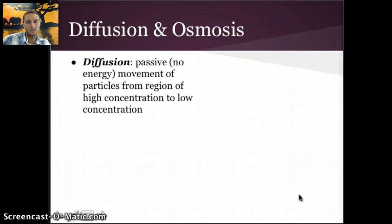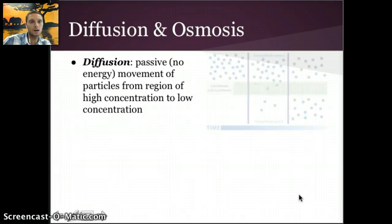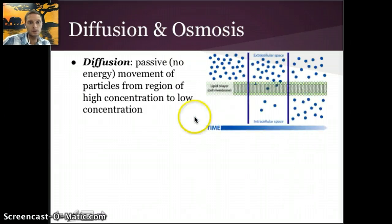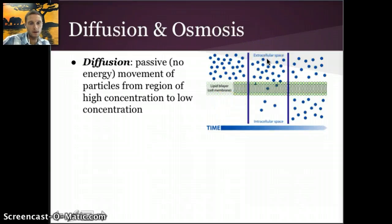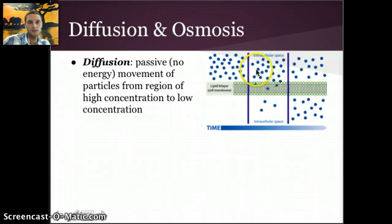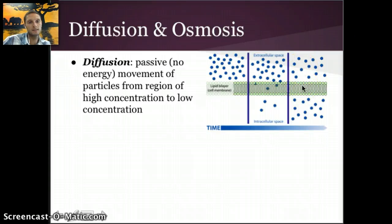Diffusion is a passive process — meaning it does not require any energy. It's the passive movement of particles from a region of high concentration to low concentration. In this image, we have an area of high concentration with lots of particles and an area of low concentration. Over time, particles that are small enough or have matching polarity move from outside the cell to within the cell until equilibrium has been reached. This process is called diffusion.